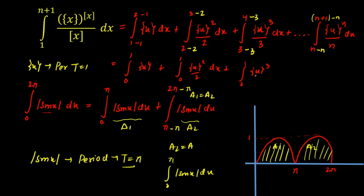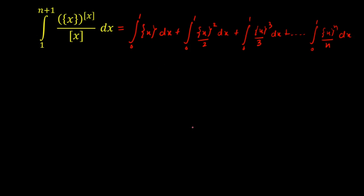This is a very important step. When x varies from 0 to 1, we have {x} = x − [x] = x − 0 = x, since [x] = 0 on that interval. That is the main reason I converted all limits to 0 to 1: on this interval, {x} simplifies to x. So I can now rewrite everything in terms of x.